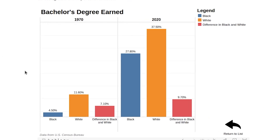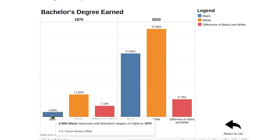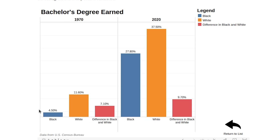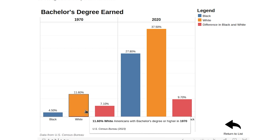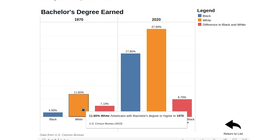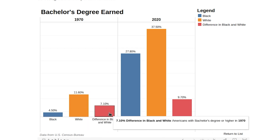The bar charts on the left-hand side are going to be for 1970 or thereabout, and on the right-hand side for 2020. What we have here is the black American outcome in 1970. So for bachelor's degrees, you can see that four and a half percent of black Americans in 1970 held a bachelor's degree, while 11.6 percent of white Americans. This yielded a disparity of 7.10 percent — the difference in educational attainment between black and white Americans.